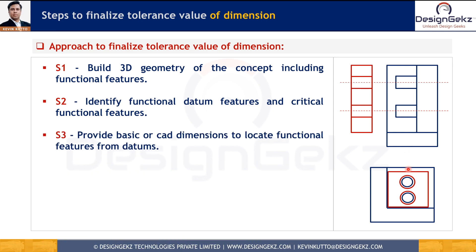The third step involves addition of basic CAD dimensions of all functional features from the datums, as well as dimensions between critical features if they are interrelated. We establish dimensional relationships of critical features from the datum. In this case, the dimensions of the two lugs from each other, the holes from each other, and their relation with respect to the datums are very crucial, so we identify those and add them into the CAD geometry.